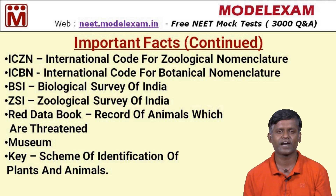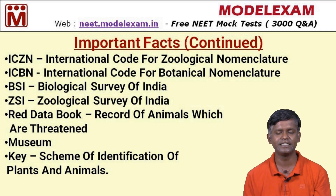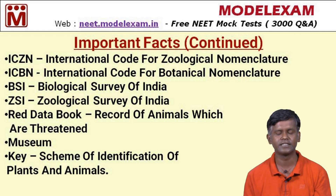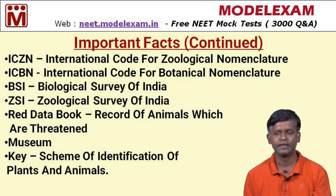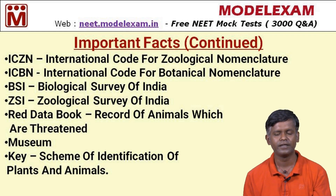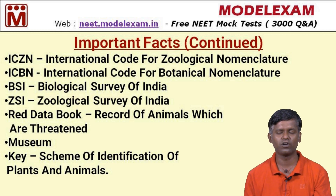Some important facts about biological classification: ICZN stands for International Code for Zoological Nomenclature. ICBN stands for International Code for Botanical Nomenclature. BSI is the Biological Survey of India and ZSI is the Zoological Survey of India. These organizations focus on conservation and preservation of endangered or endemic species.